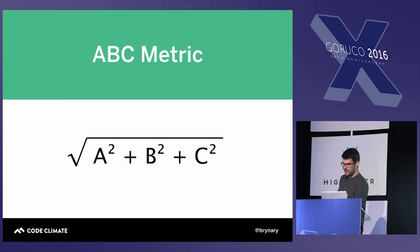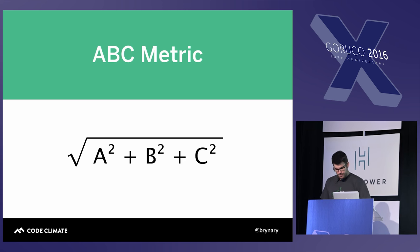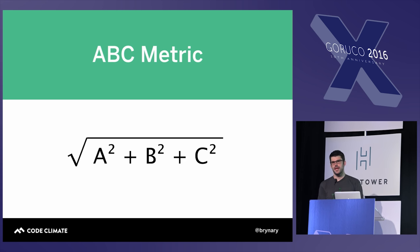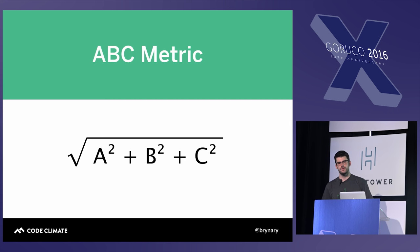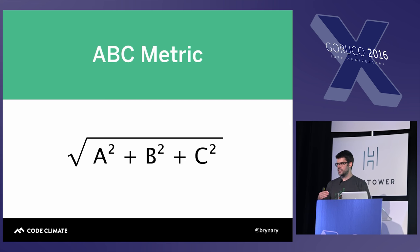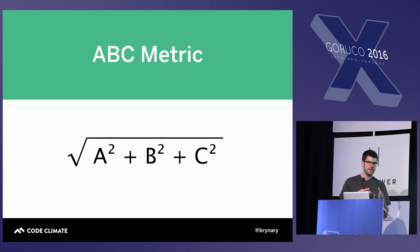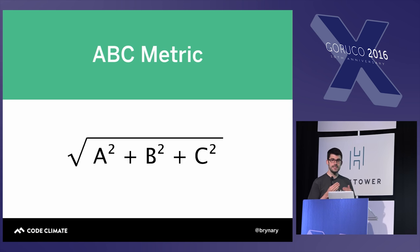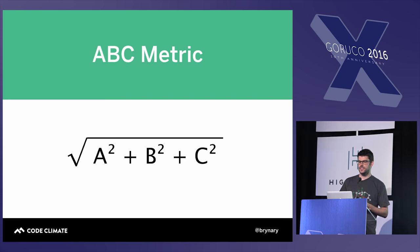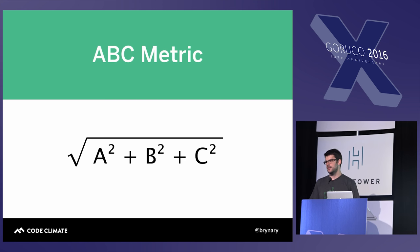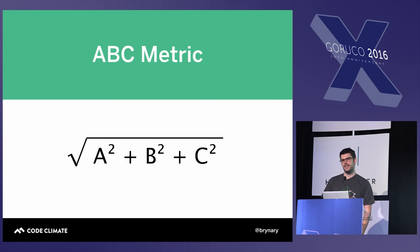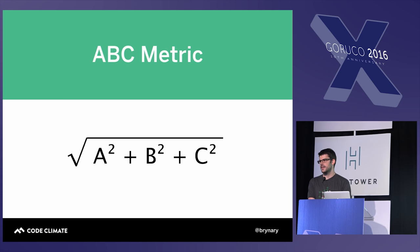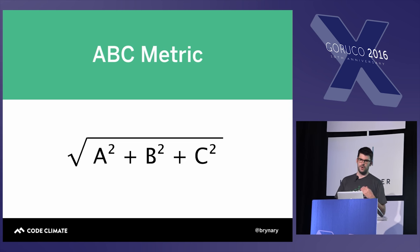This is the definition of the ABC metric. To compute it for a given unit of code, you take the assignments squared, plus the branches squared, plus the conditionals squared, sum that all up, and take the square root — producing a single number. What can seem nice about this is it doesn't just take into account code paths and conditional logic like cyclomatic complexity. It also incorporates assignments, which add to the cognitive load of processing a given block of code, so it can be perceived as more precise for estimating complexity.